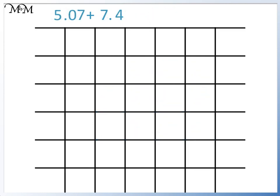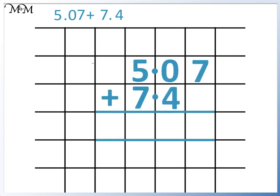Here we have 5.07 plus 7.4. We line up the digits in their place value columns. There is a space in the hundredths column of 7.4. It is worth 0 so we can write a 0 in here. We'll begin by adding the digits in the hundredths column. 7 plus 0 equals 7. Next we'll add the digits in the tenths column. 0 plus 4 equals 4. Finally we'll add the digits in the units column. 5 plus 7 equals 12. We write the 2 in the units column and carry the 1 over to the tens column. We just have 1 in the tens column. So the answer is 12.47.